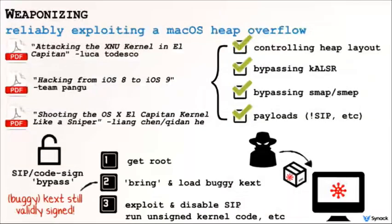Unfortunately we don't have time to talk about how to weaponize this exploit, but there have been great talks articulating exactly how to do this with a heap overflow — covering how to groom the heap, position C++ objects, bypass KASLR, SMAP, and payloads. One interesting weaponization technique: even if the bug is patched, on modern versions of OS X, even with root access, you can't bypass System Integrity Protection or load unsigned code into the kernel. However, this is a signed driver. So as long as we have a buggy version of this driver, we can bring it to a target, load the driver, exploit the vulnerability, and then we have arbitrary code execution in ring zero in the kernel — allowing us to bypass System Integrity Protection or run unsigned code in the kernel.